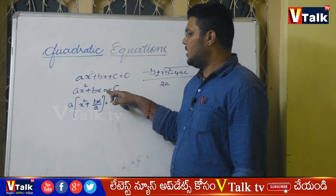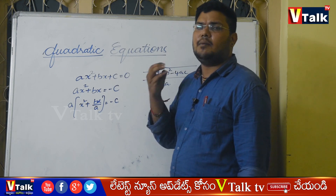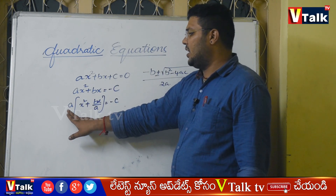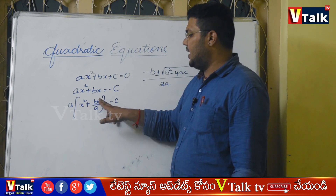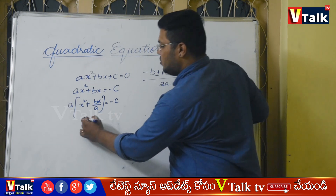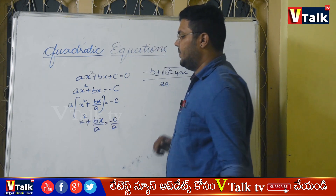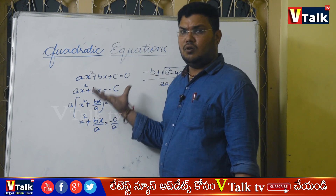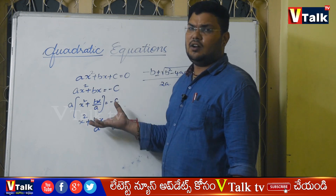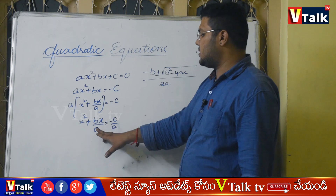Step 1: ax squared plus bx equal to minus c. Step 2: take the x squared coefficient as common. Dividing through by a gives x squared plus bx by a equal to minus c by a.